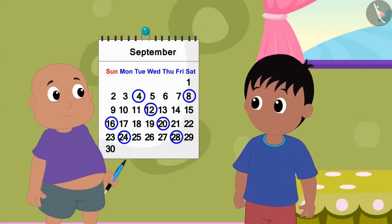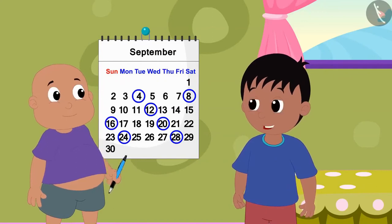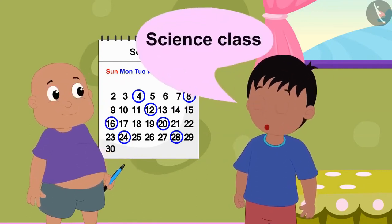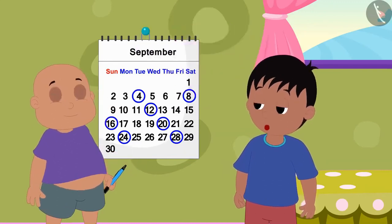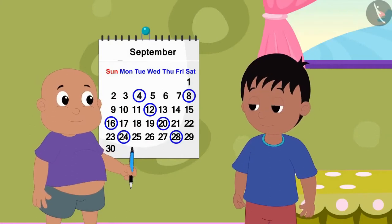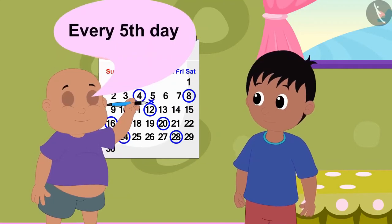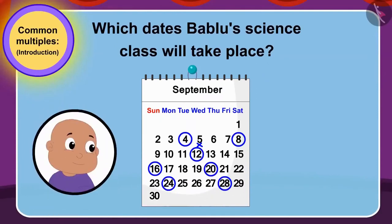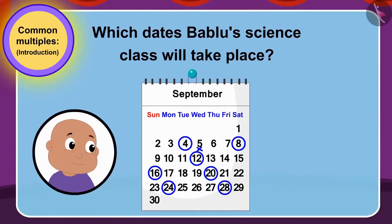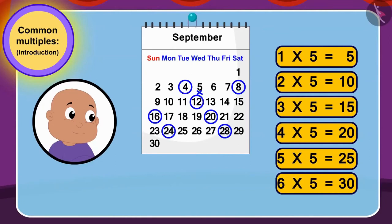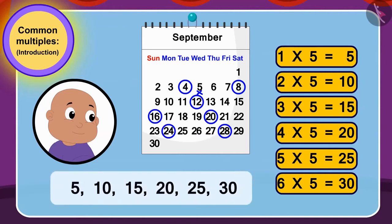Now Raju said to Bablu, your class is on so many days and you have also enrolled in science class. On what days will your science class be? Bablu told Raju that his science class would be every fifth day. Can you use multiples to tell on which dates Bablu's science class will take place? Bablu will go to science class on 5, 10, 15, 20, 25 and 30.